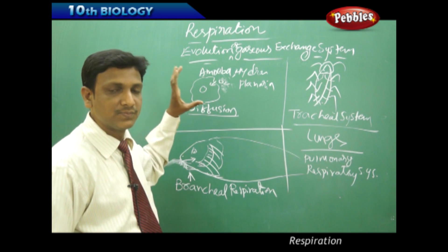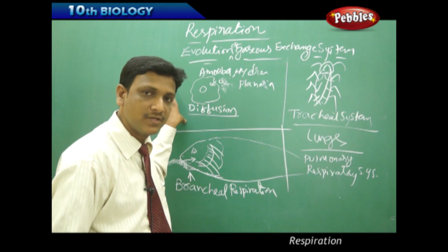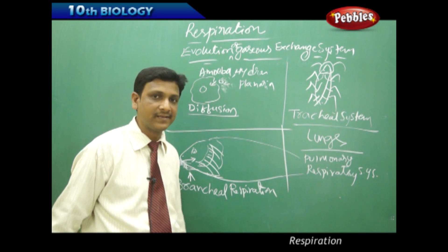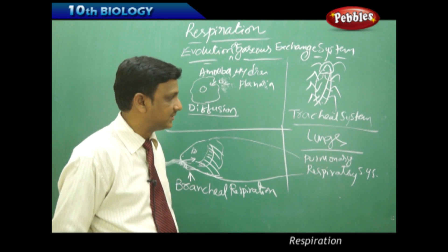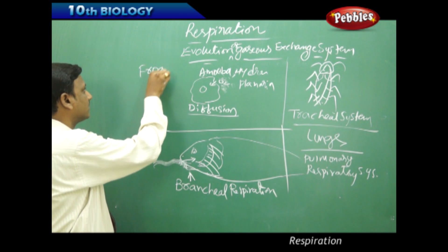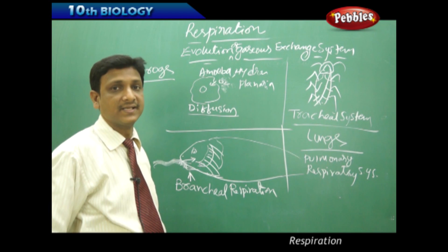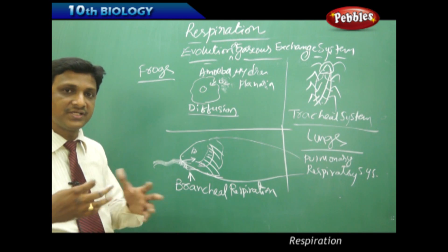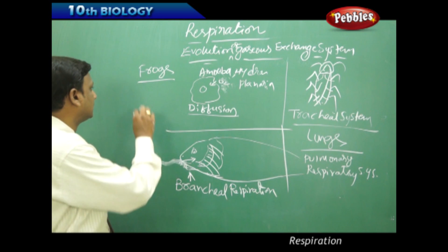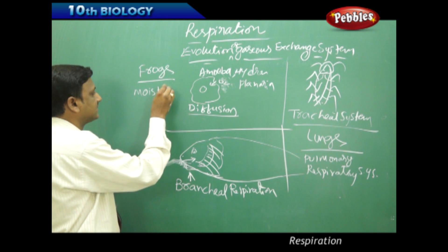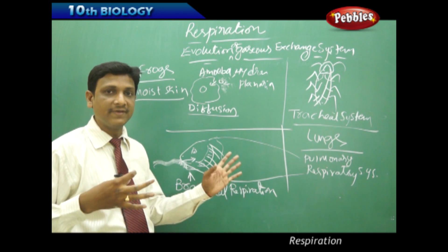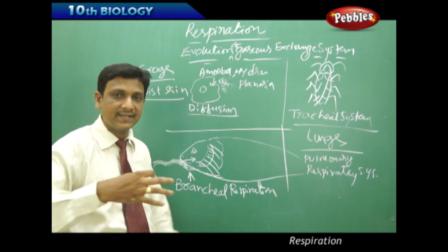In unicellular and very small animals we find diffusion for exchange of gases. In insects we find the tracheal system. In fishes we see the branchial respiratory system. In higher animals we see the pulmonary system. In some cases like frogs and salamanders, they have moist skin through which they can exchange gases — air comes in contact with their moist skin and exchange of gases takes place there. This is called cutaneous respiration. So these are the various ways different animals exchange gases.